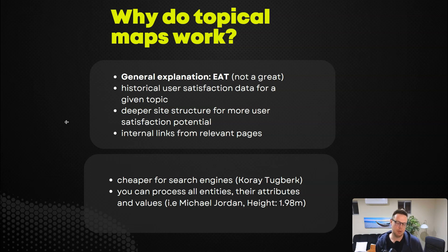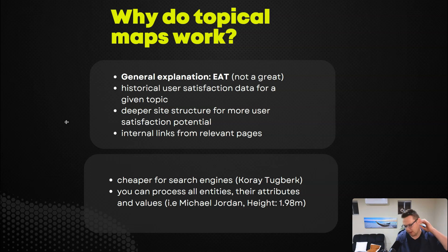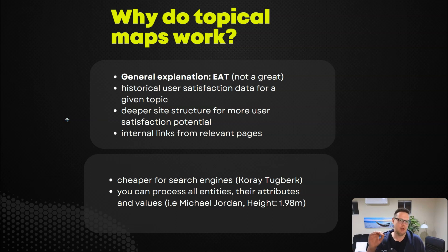So why do topical maps work? A general explanation is EAT — expertise, authoritativeness, and trust — which I'm not a fan of, because it tries to explain one concept by borrowing another concept that also needs to be explained. Whether EAT is actually a proven concept or something Google made up is somewhat yet to be researched. That's why I don't like saying topical maps work because of EAT.